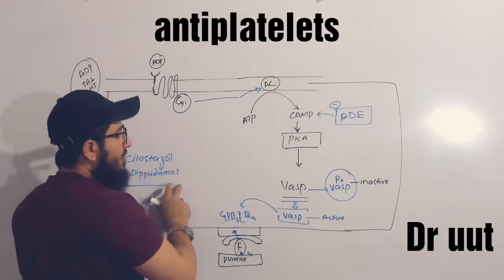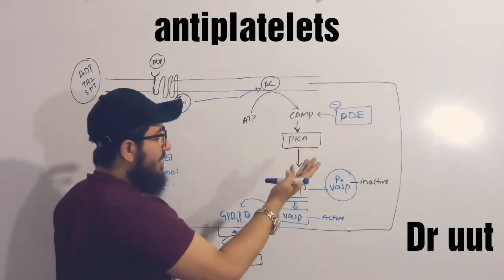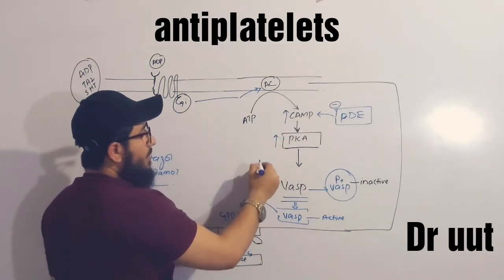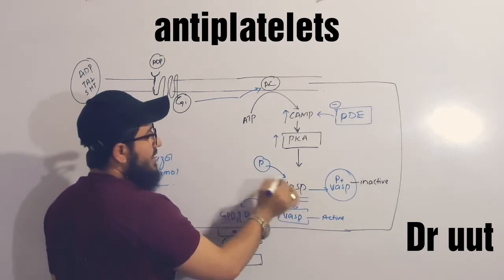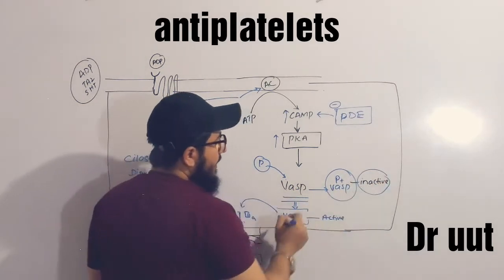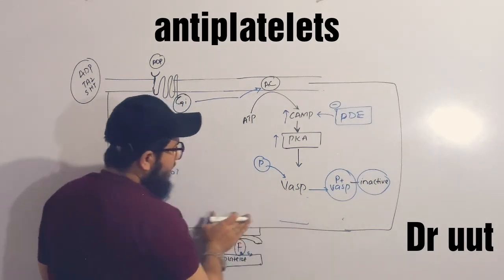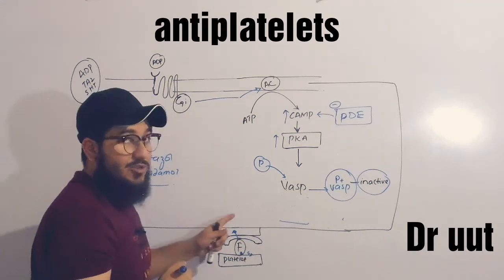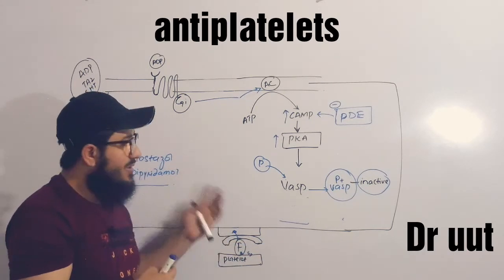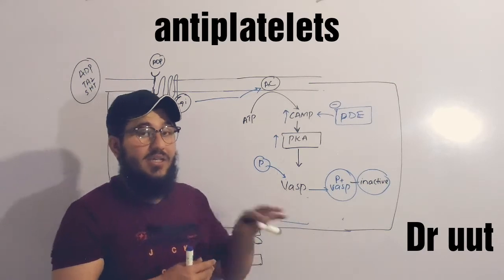When we give cilostazol and dipyridamole, these medications inhibit phosphodiesterase. When phosphodiesterase is inhibited, cyclic AMP production will be increased, protein kinase A activity will be increased, and it will add phosphate to VASP causing inactivation of VASP. There is then no active VASP available to activate the GP2B3A receptor. When the receptor is not activated, there is no aggregation with another platelet. This is how cilostazol and dipyridamole do their job to reduce platelet aggregation.